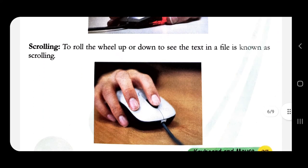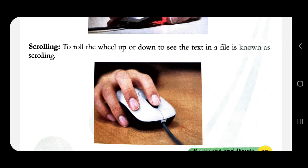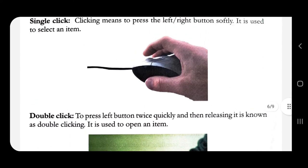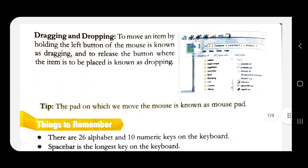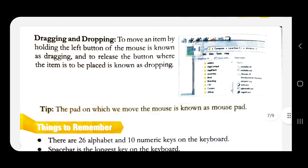Scrolling: rolling the wheel up or down to see the text in a file is known as scrolling. There is a wheel on the mouse — you roll it up or down to see the text in the file. That is scrolling.